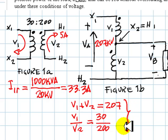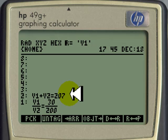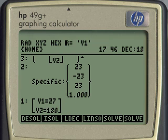We have two equations and two unknowns. These two equations. We solve for V1 and we solve for V2. The voltages are 27 and 180 volts.